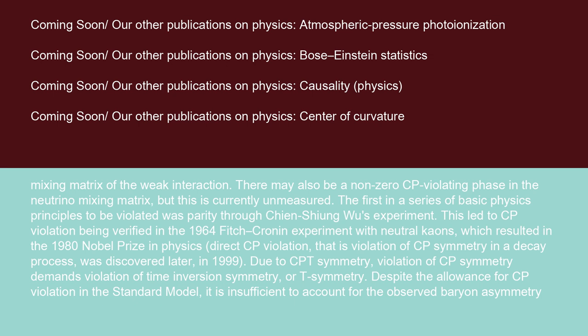The first in a series of basic physics principles to be violated was parity through Chien-Shiung Wu's experiment. This led to CP violation being verified in the 1964 Fitch-Cronin experiment with neutral kaons, which resulted in the 1980 Nobel Prize in Physics. Direct CP violation, that is violation of CP symmetry in a decay process, was discovered later in 1999.